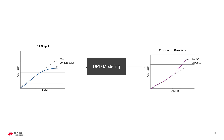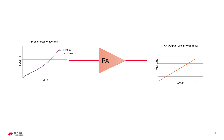If we have knowledge of the non-linear characteristics of a PA, we can increase the input power level before it goes into the PA to compensate for gain compression. As a result, the PA output is linear again, at least in theory. This is the very basic concept of pre-distortion. When this power pre-adjustment is done digitally in baseband, it is called digital pre-distortion, or DPD.